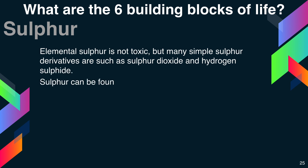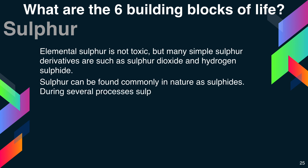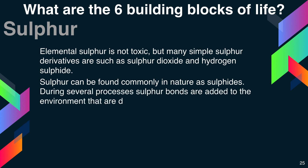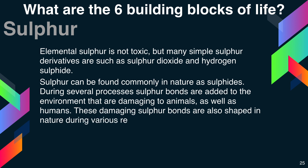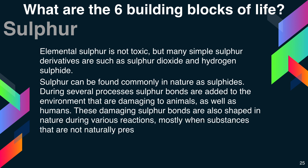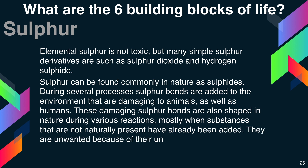Elemental sulfur is non-toxic, but many sulfur derivatives are — such as sulfur dioxide and hydrogen sulfide. Sulfur can be found commonly in nature as sulfides. During several processes, sulfur compounds are added to the environment that are damaging to animals as well as humans. These damaging sulfur compounds are also formed in nature during various reactions, mostly when substances not naturally present have to be added. They are unwanted because of their unpleasant smells and are often highly toxic.